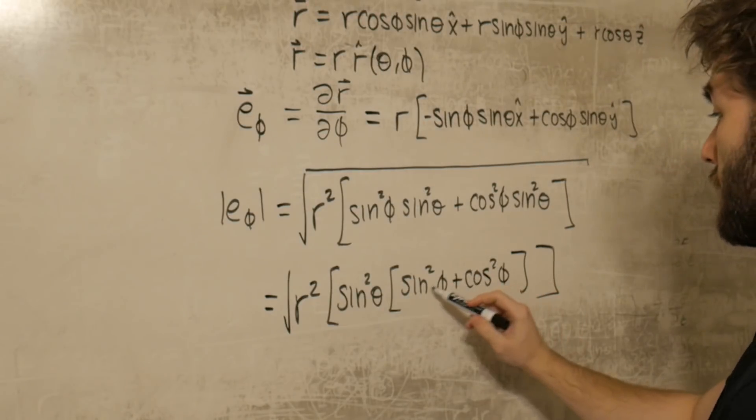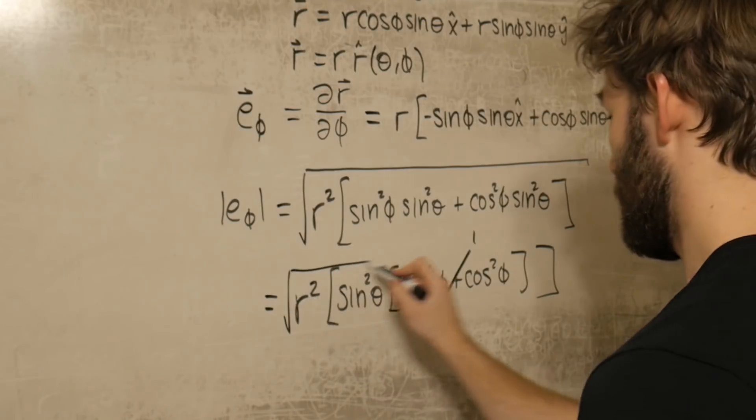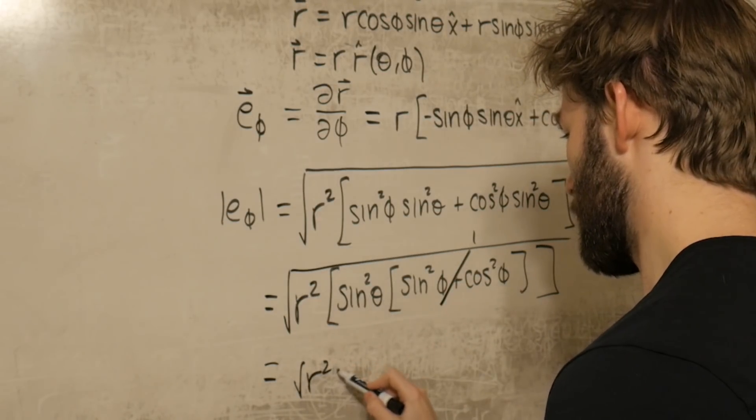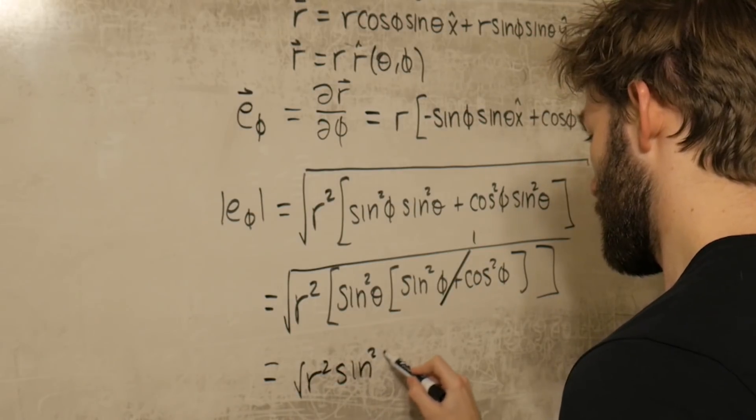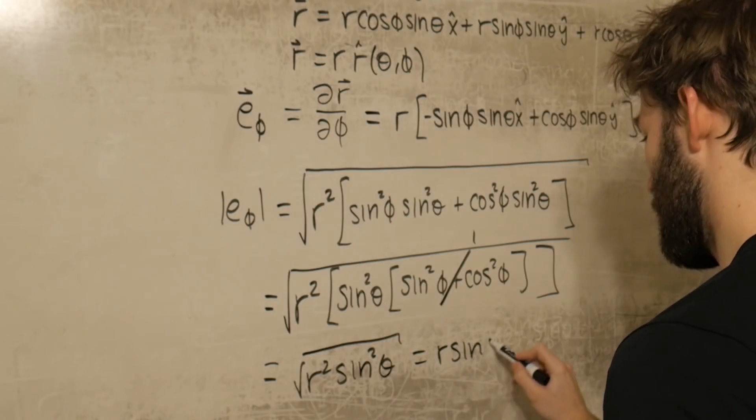And we're just going to use the identity that sine squared plus cosine squared is 1, which of course is just r sine theta.